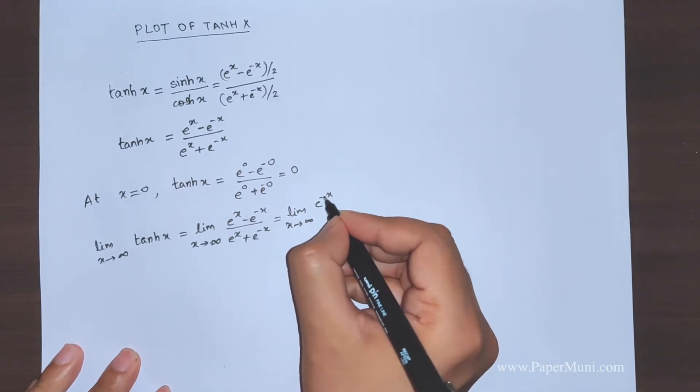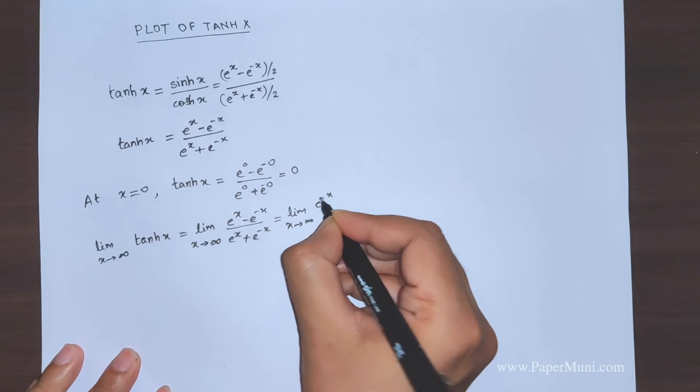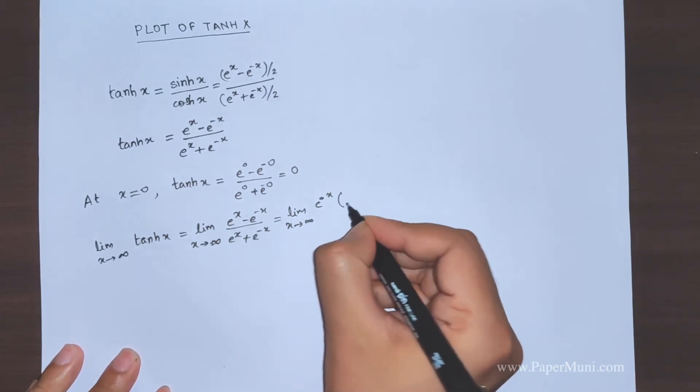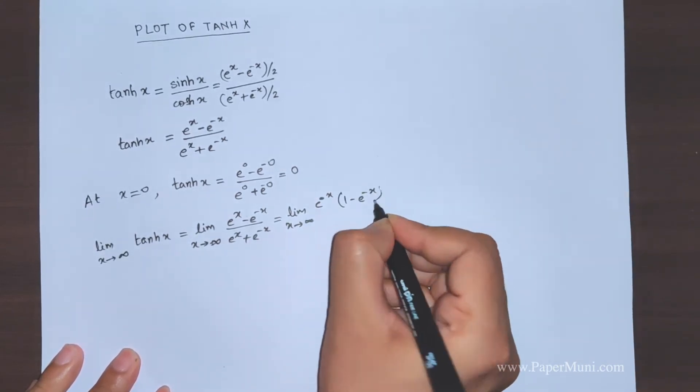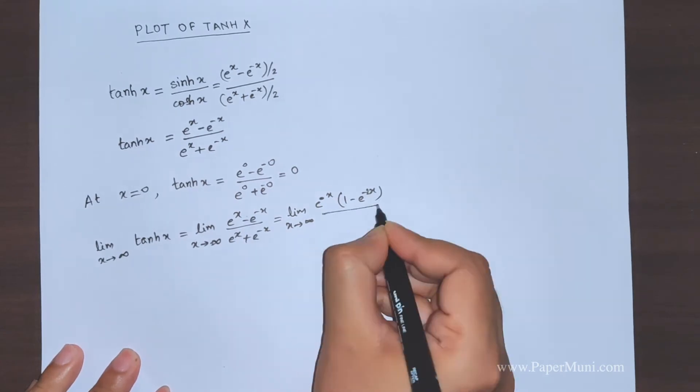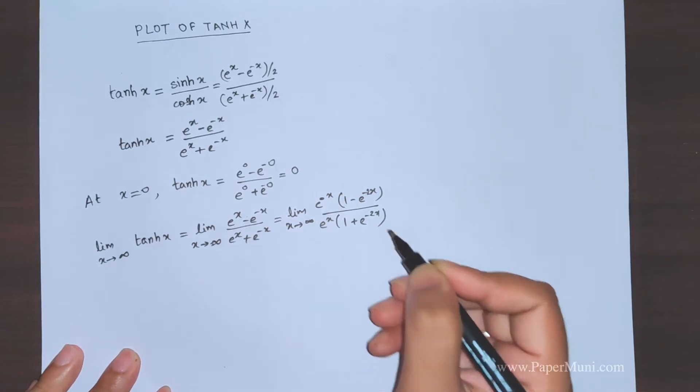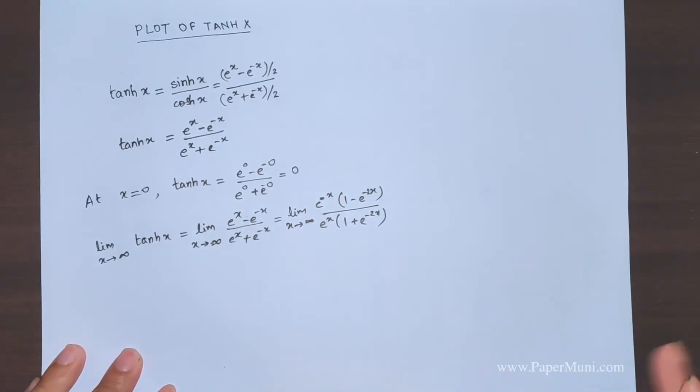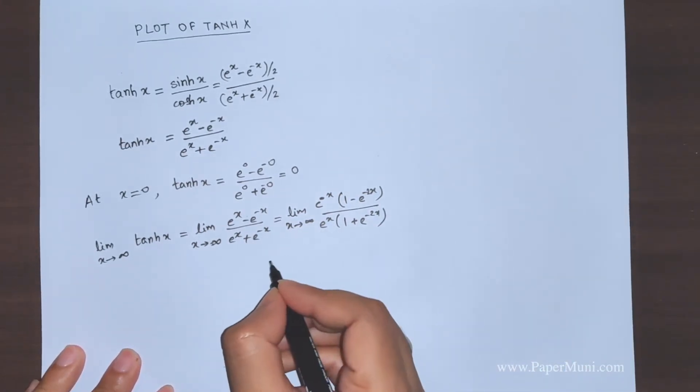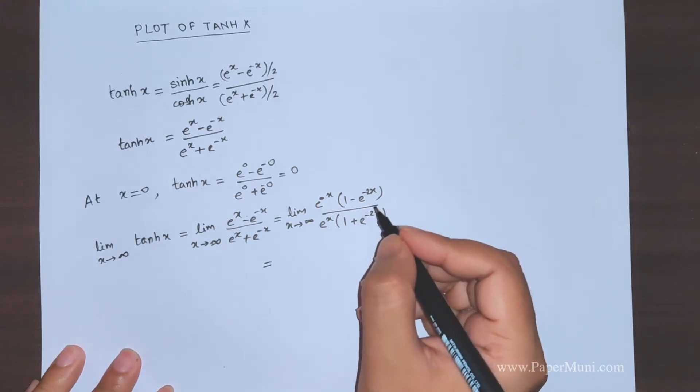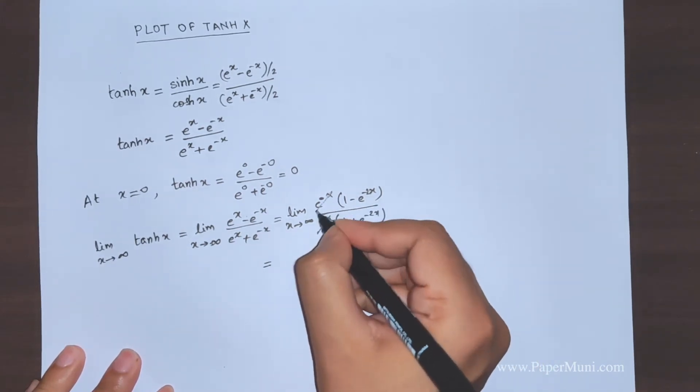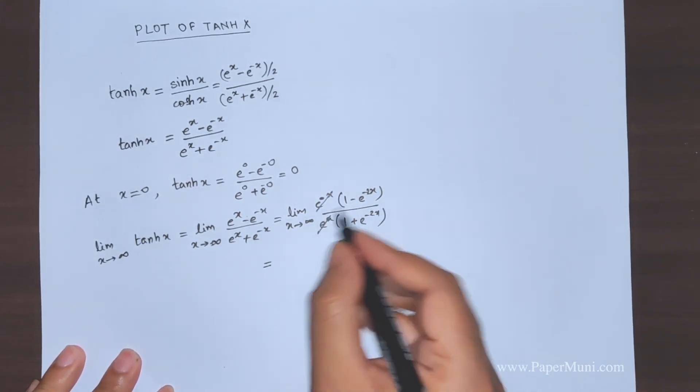Or better if we take e^x common. This becomes (1 - e^(-2x))/(1 + e^(-2x)). We cancel the e^x terms. Now we put the limit.